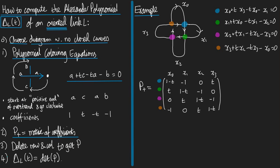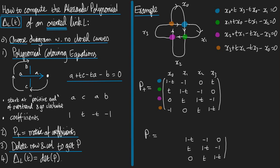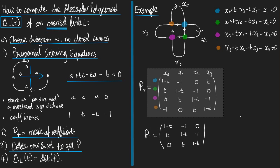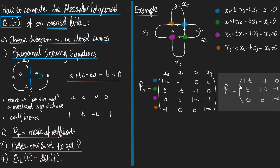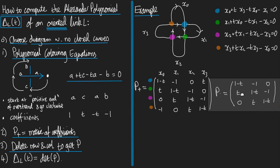Step number three: delete a row and column to get P. So that's fine. Let's take a copy of P+. Let's delete the top row and the left hand column to get our P. There we go, so there is P.